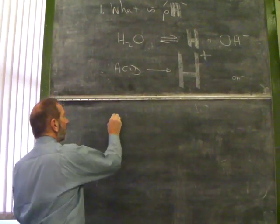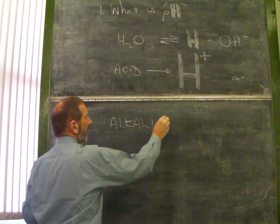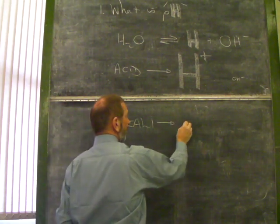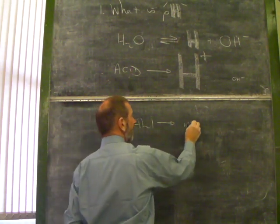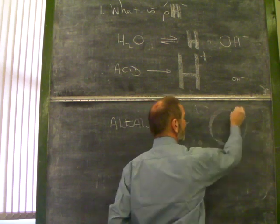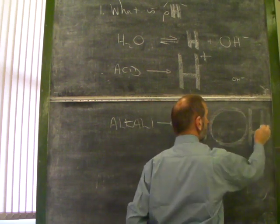And what about an alkali? An alkali is the other way around. In an alkali, you've got very few hydrogen ions, but of course, many numbers, great numbers of hydroxide ions.